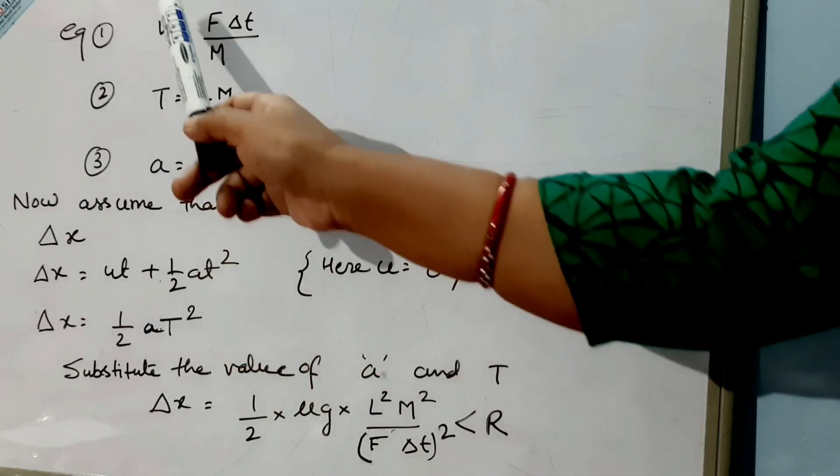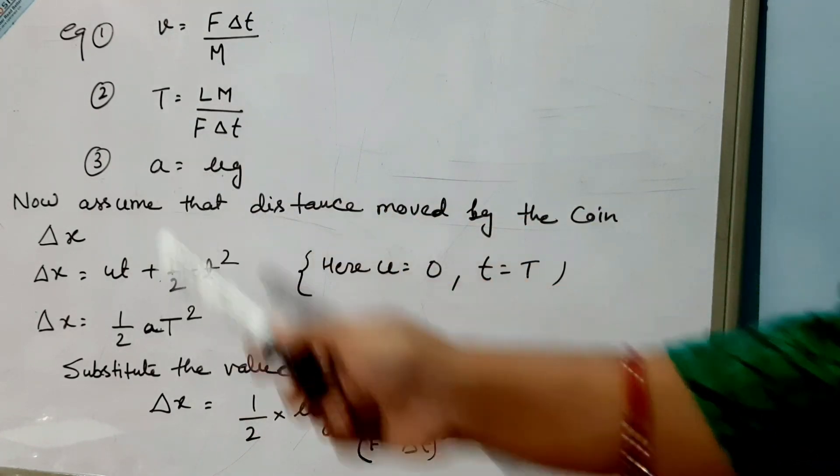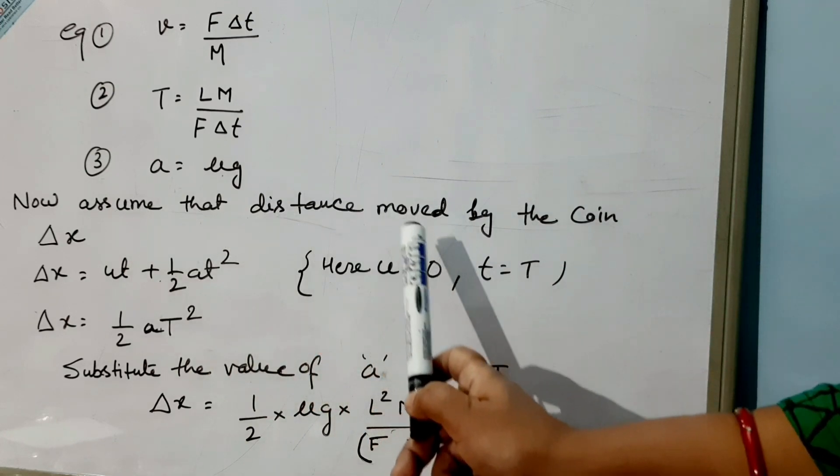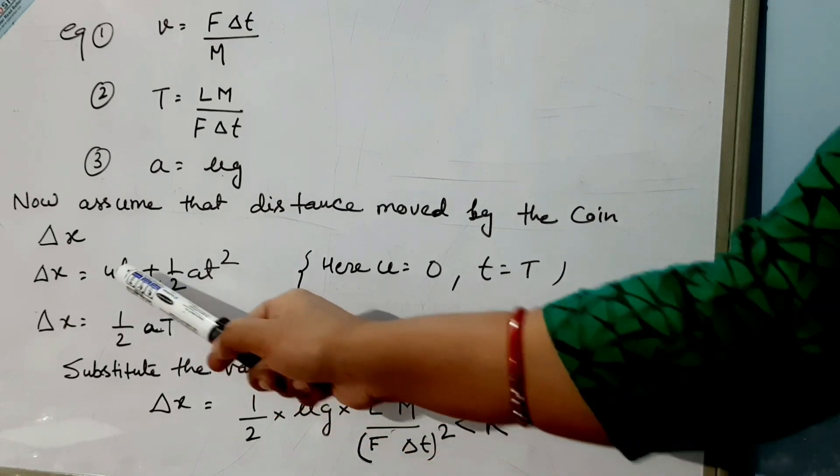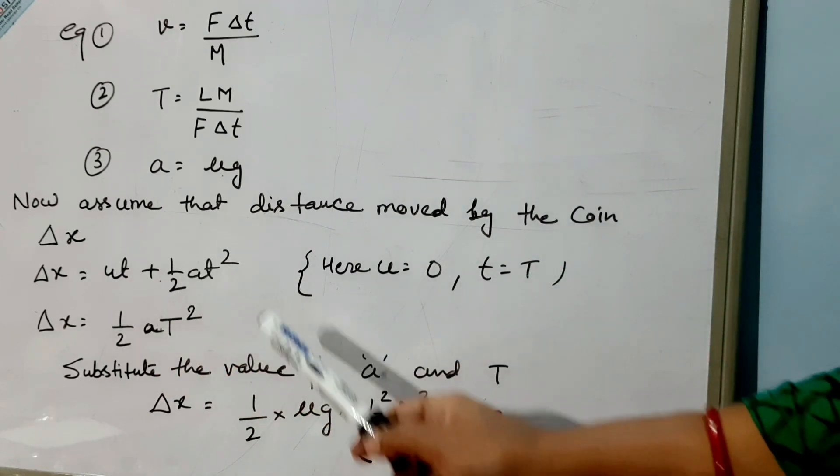Till now we have got these three equations: velocity, time, and acceleration of the coin. Now assume that distance moved by the coin is Δx. So we'll use the equation of motion: Δx = ut + ½at².